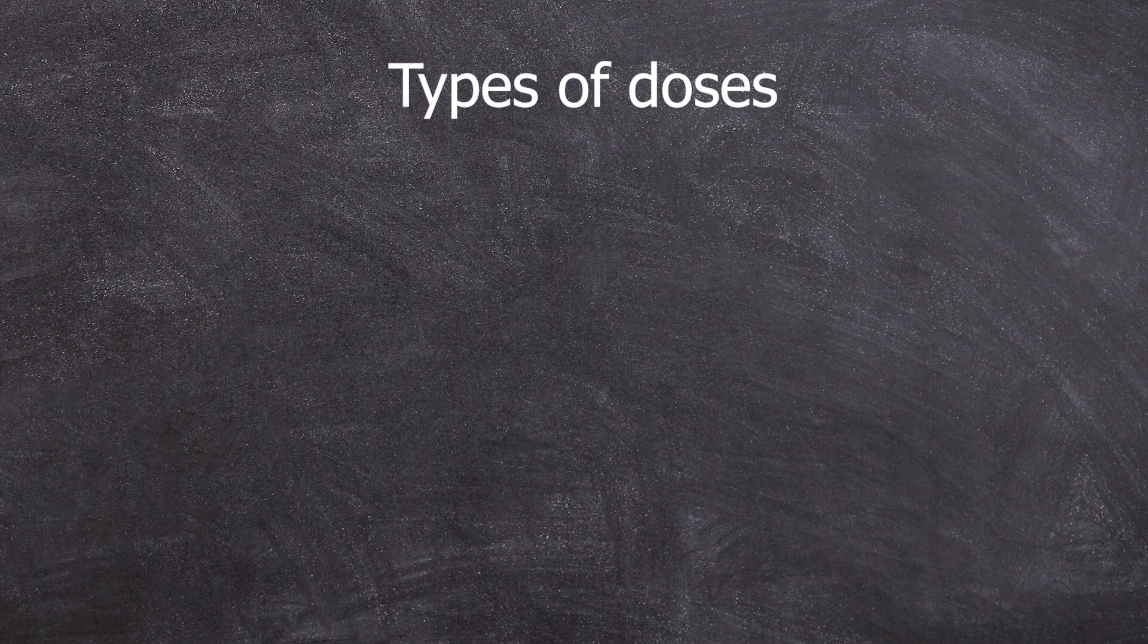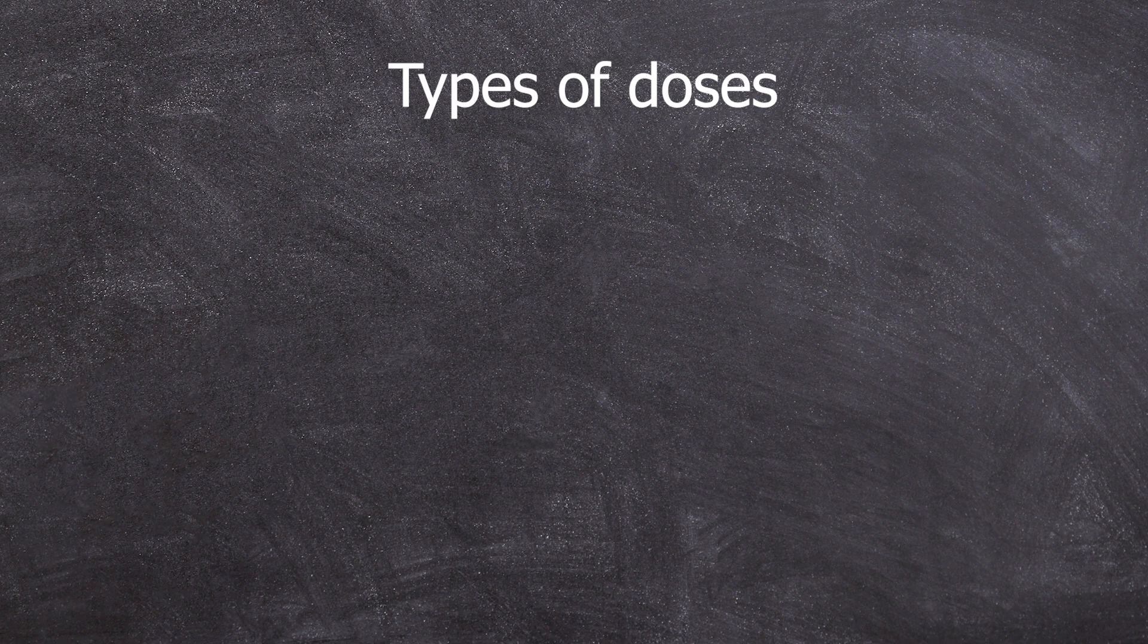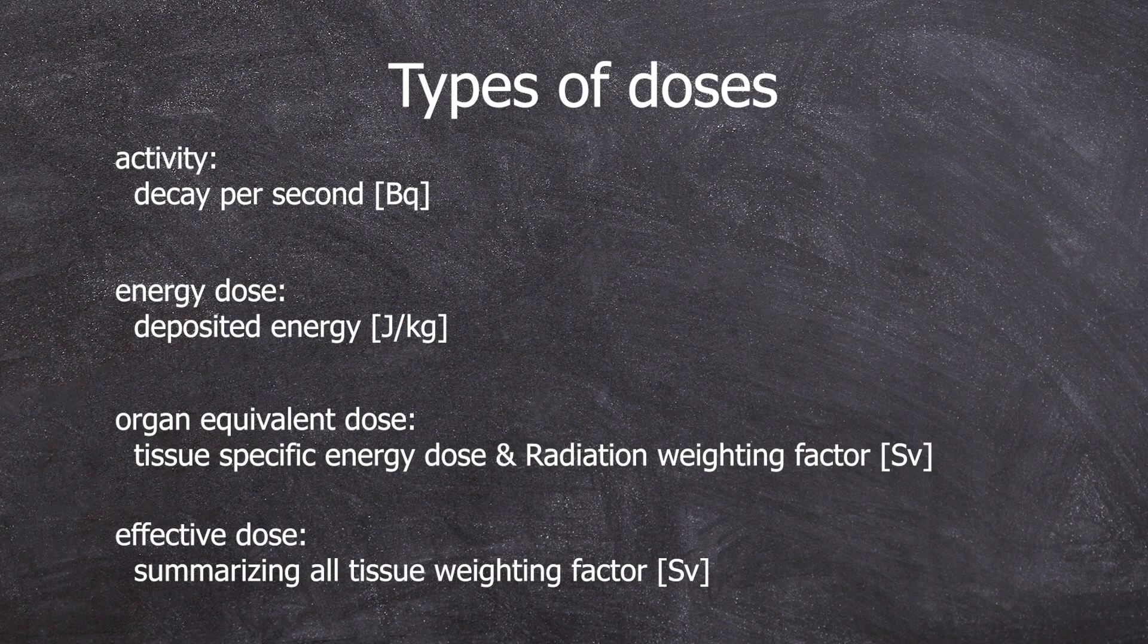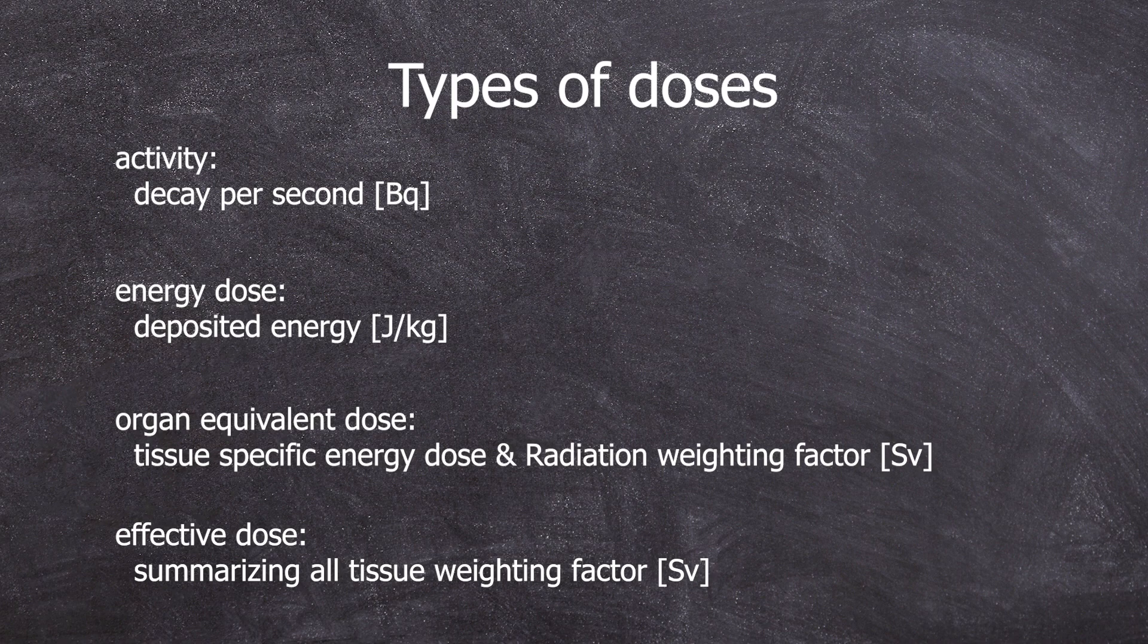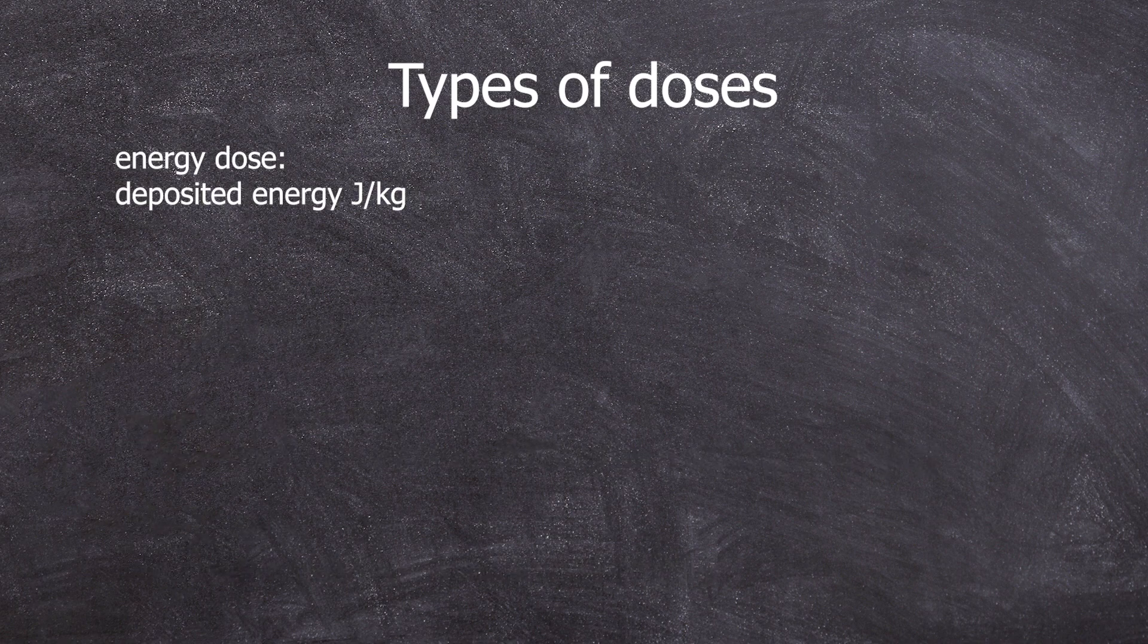But why do we need to know values like the dose rate? There are different dose quantities and when you include the time component, you get a dose rate. Starting from the most physical standpoint, we have the activity, meaning how many decays per second, regardless of the type of decay.